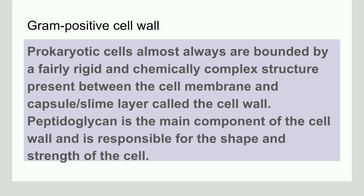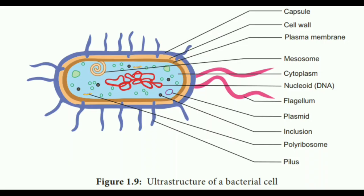Today we will discuss the Gram-positive cell wall. A prokaryote has a capsule and a cell membrane, with a layer called the cell wall between them. This cell wall is made up of peptidoglycan, which is its major component and gives the cell wall its shape and strength. The outermost layer of a bacterial cell is the capsule, followed by the cell wall, and then the plasma membrane.